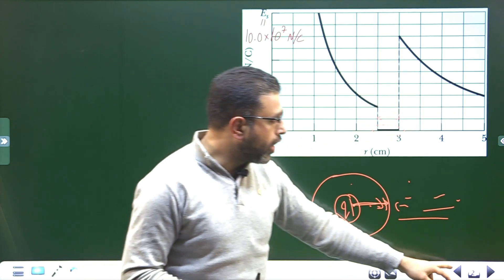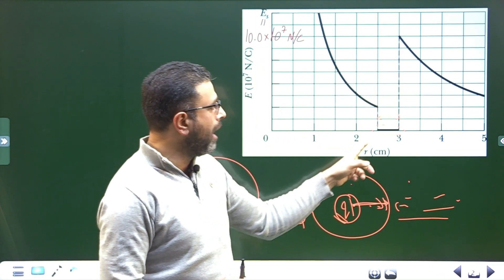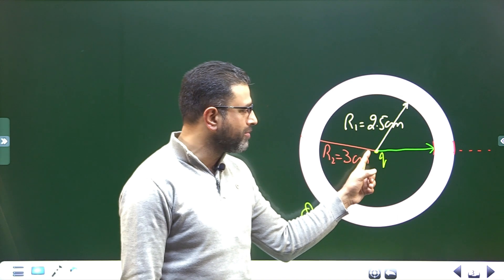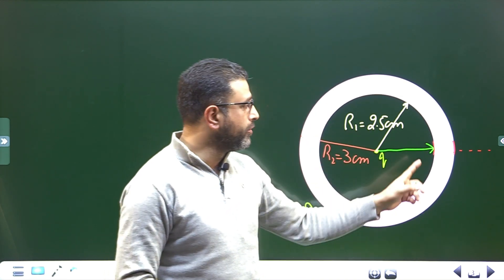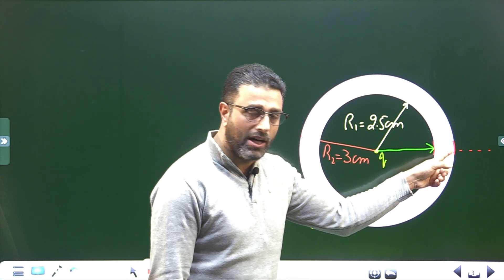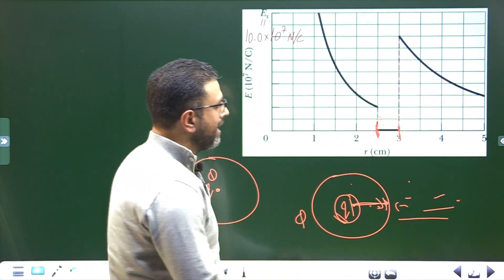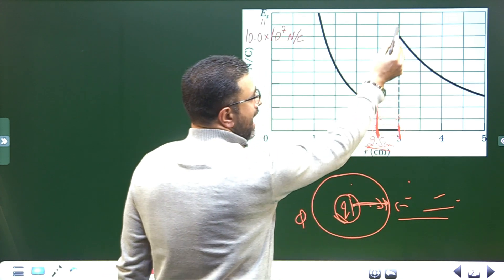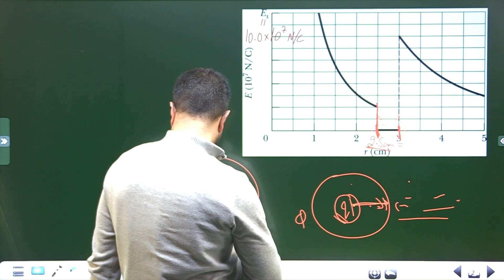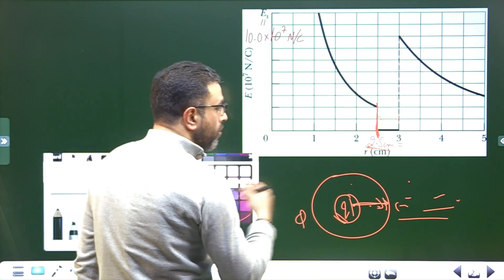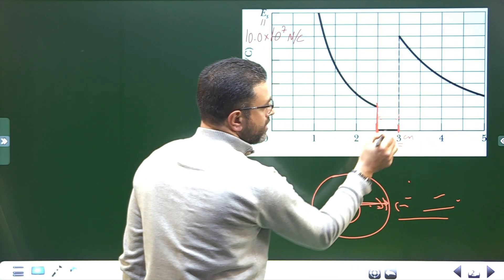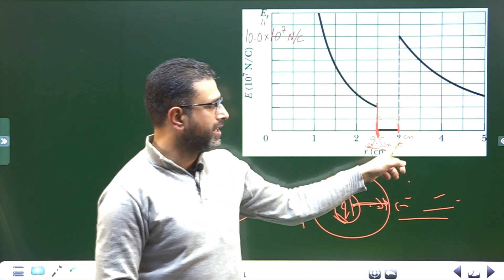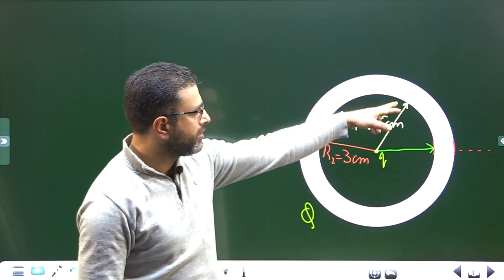The three regions correspond to: up to 2.5 cm (center to inner surface), from 2.5 to 3 cm (inner to outer surface, field zero), and from 3 cm onwards (outside the shell). From the graph, inner radius is 2.5 centimeters and outer radius is 3 centimeters, read directly where the behavior changes.